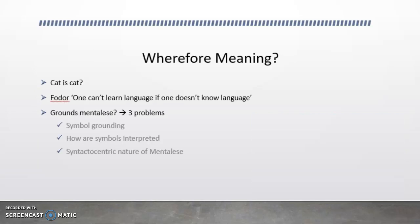Where does meaning come from? For example, how do we know that the word cat matches the idea of a four-legged furry creature with a tail that says meow?